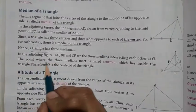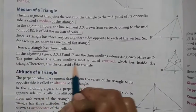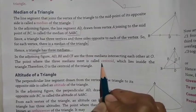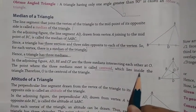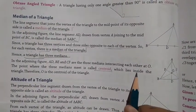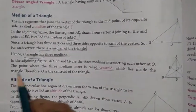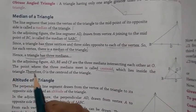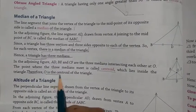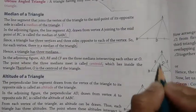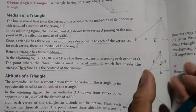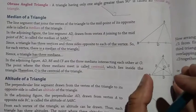The point where the three medians meet is called the centroid. The centroid lies inside the triangle. Therefore, O is the centroid of the triangle.